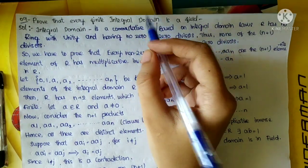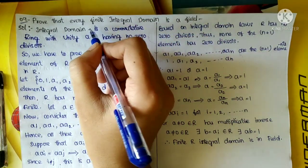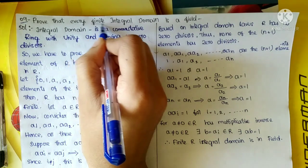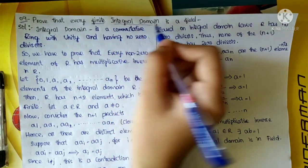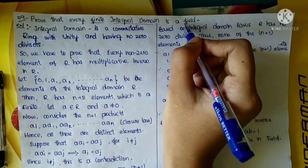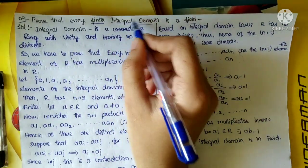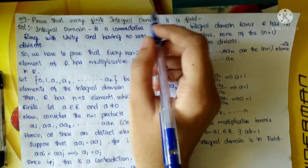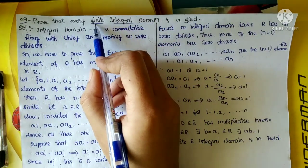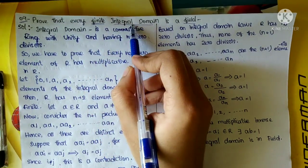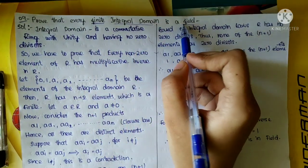So here the main three important words are: finite, integral domain, and field.